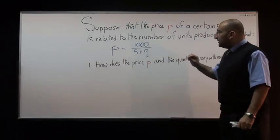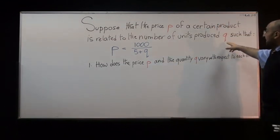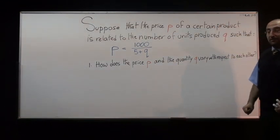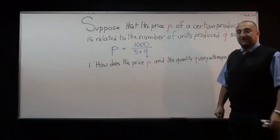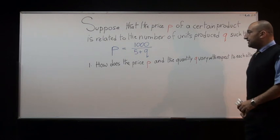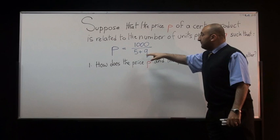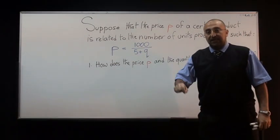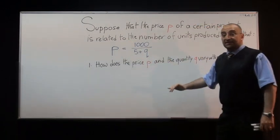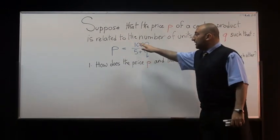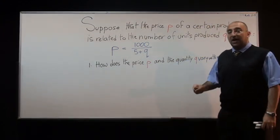We have a commodity, we're producing Q units of this commodity, and each unit is priced at P dollars. How does the price P and the quantity Q vary with respect to each other? That is to say, when P changes — increases or decreases — how does Q relate to that? Does it increase also, or decrease? Why or why not?